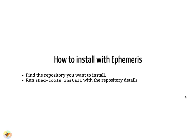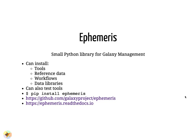When installing with Ephemeris, you can find the repository you want to install in the tool shed and install it with the Ephemeris shed_tools command. Ephemeris is a Python library for Galaxy management. It can be used to install tools, reference data, workflows, and data libraries onto a Galaxy instance, and also to run tool tests. It's a package installable with pip, containing commands to manage tools through the Galaxy API. There's no need to use Ephemeris commands from the server running Galaxy, though you can.